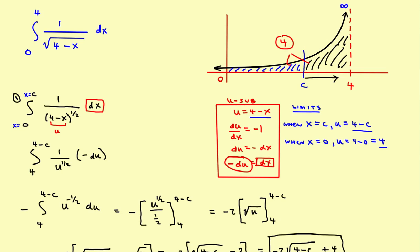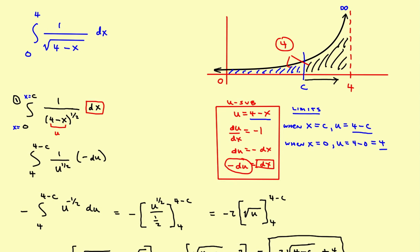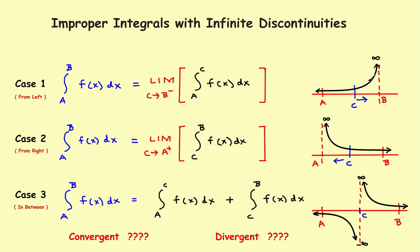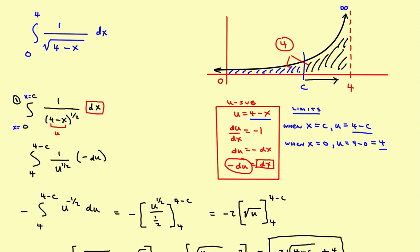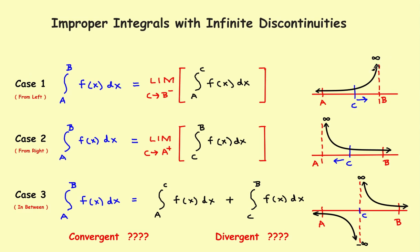That's an example of a case 1 problem where the asymptote was on the right-hand side. We follow the same two-step process: first find the definite integral from a to c, then take the limit of that answer as c approaches the asymptote. In part 9 we did the asymptote on the left; in this video we did the asymptote on the right. In the next video, we'll do an asymptote in the middle.